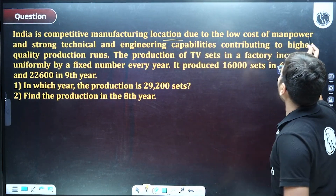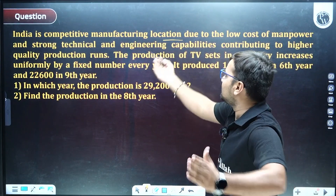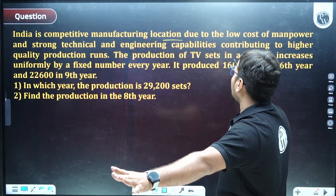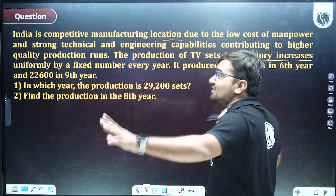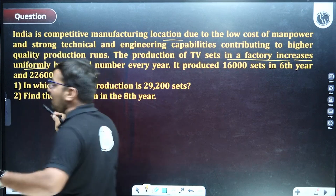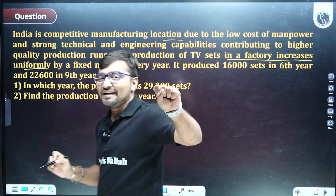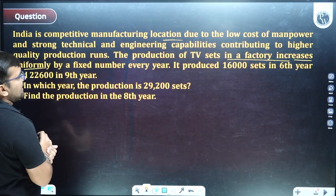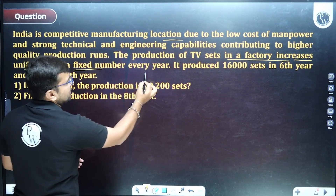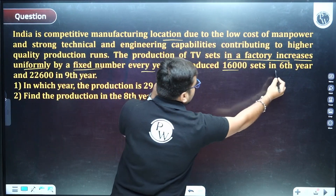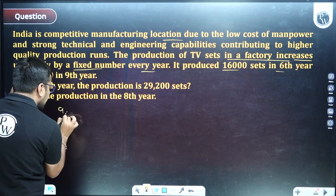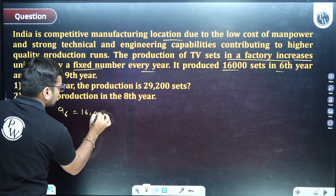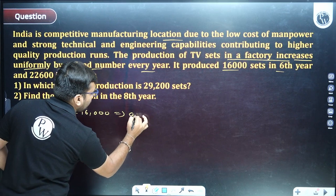India is a competitive manufacturing location due to low cost manpower and strong technical and engineering capabilities, contributing to higher quality production. The production of TV sets increases or decreases uniformly — meaning there is a common difference. In the sixth year, 16,000 sets are produced, so a6 = 16,000, which gives us: a + 5d = 16,000. This is equation number one.